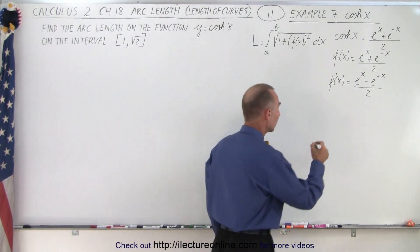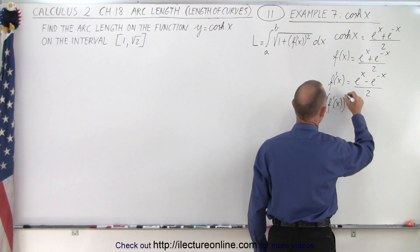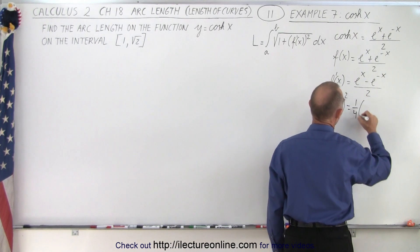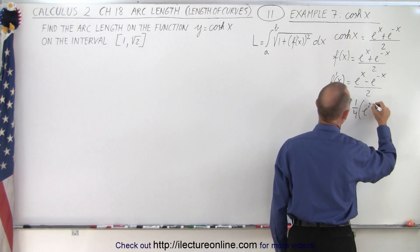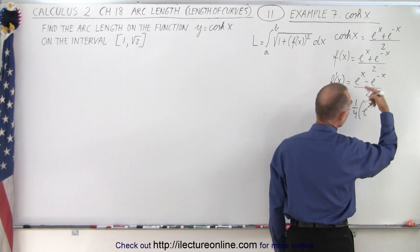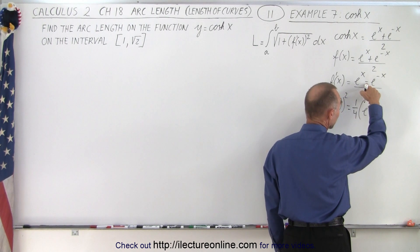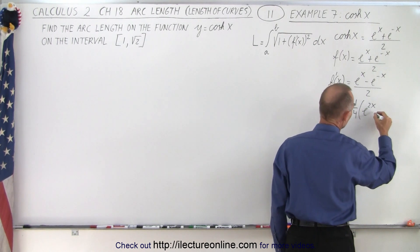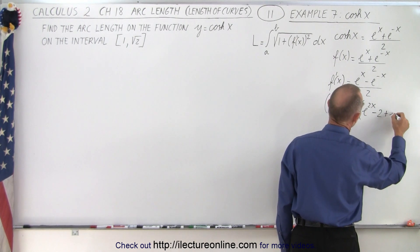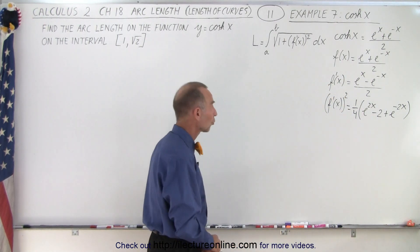Now we have to square that. So f prime of x quantity squared is equal to: 1 half squared gives us 1 fourth, times e to the 2x. Now e to the x times e to the minus x would be e to the 0, which is 1 — but it's negative 1 because we have a negative here, and multiplied by 2 that would be minus 2. And then we have plus e to the minus 2x.